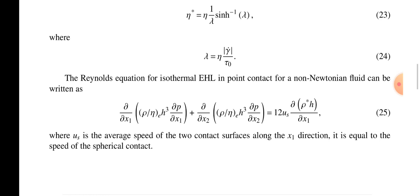∂/∂x₁[(ρη/η*)h³∂p/∂x₁] plus the derivative with respect to x₂: ∂/∂x₂[(ρη/η*)h³∂p/∂x₂] equals 12μₛ∂(ρh)/∂x₁.